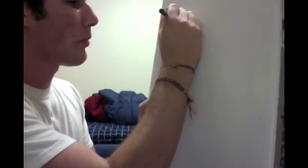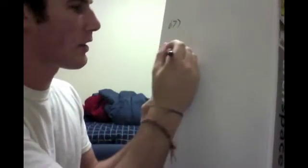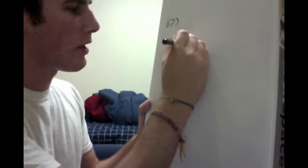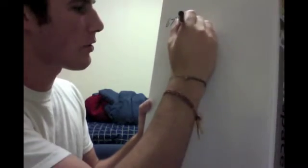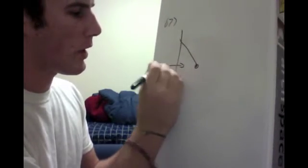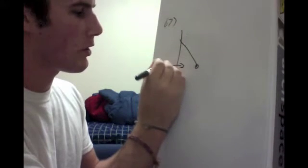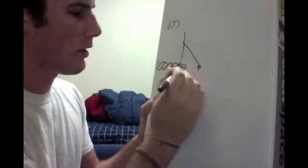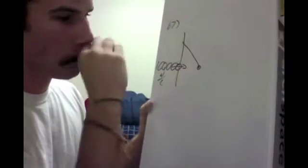Hey guys, we're going to be doing problem number 67. That involves a mass hanging from a string that is pushed over by an electric field, which is 100,000 newtons per coulomb.